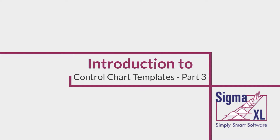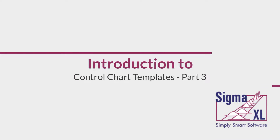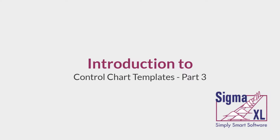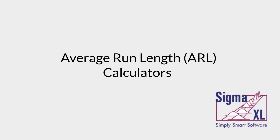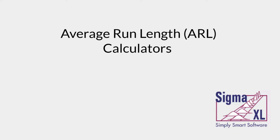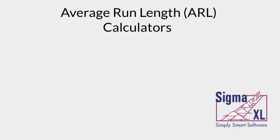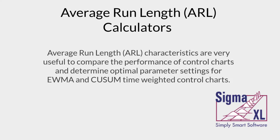Hello and welcome to SigmaXL video tutorials. This is part 3 of the introduction to control chart template series. In this video we'll be looking at the average run length calculators in SigmaXL. Average run length or ARL characteristics are very useful to compare the performance of control charts and determine optimal parameter settings for EWMA and CUSUM time-weighted control charts.